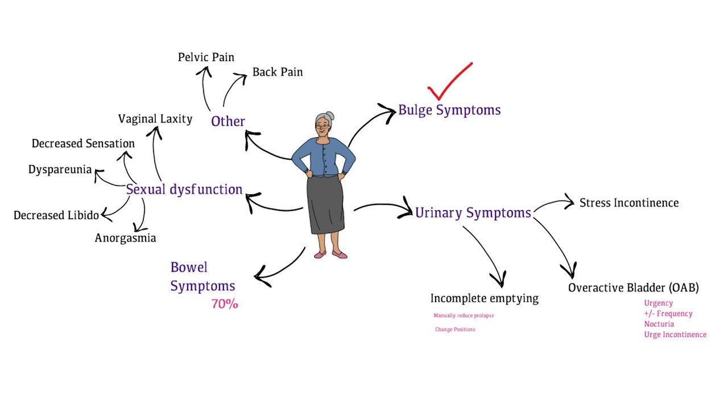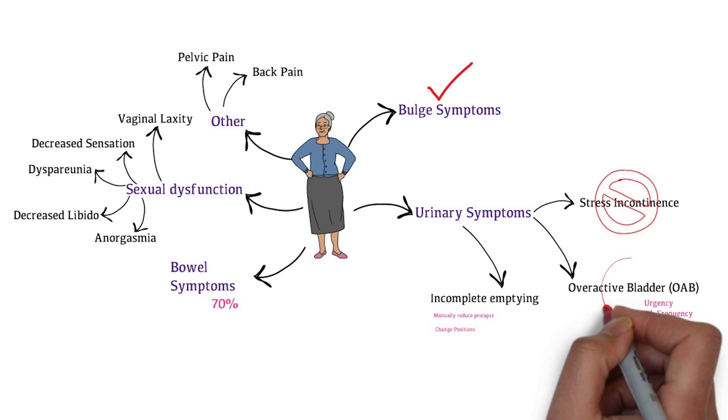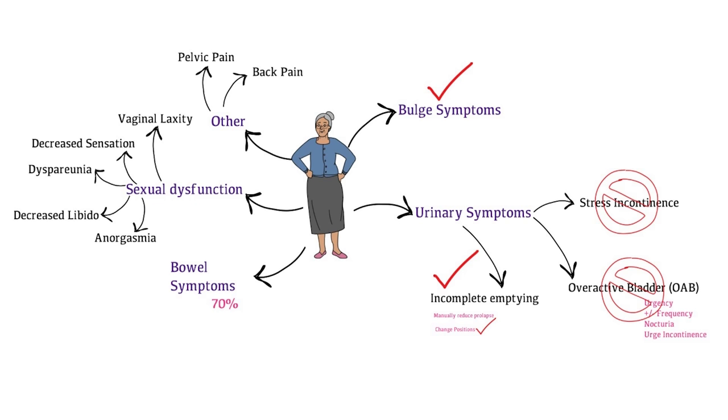When you ask about urinary symptoms, she denies having any stress incontinence or symptoms of overactive bladder. She is unable to empty her bladder fully without shifting positions or manually reducing the bulge. She has had one previous episode of urinary retention which required catheterization.